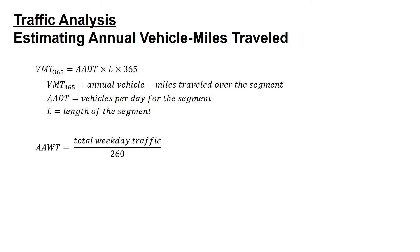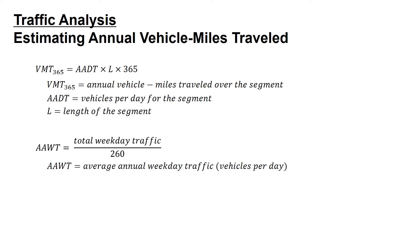We also have an equation for the annual average weekday traffic. The AAWT is equal to the total weekday traffic divided by 260, where AAWT is the average annual weekday traffic in vehicles per day.